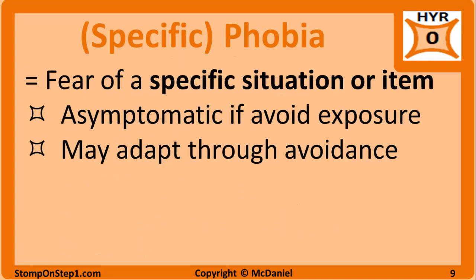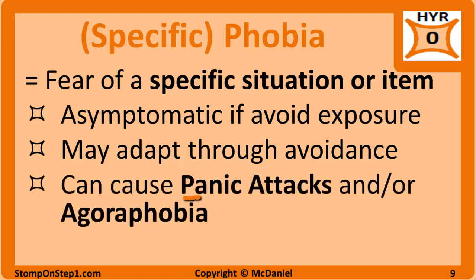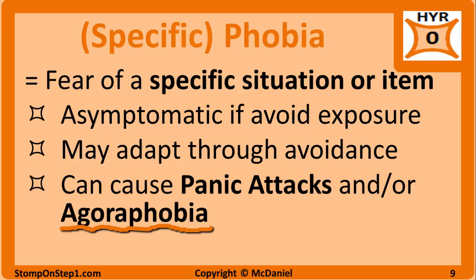Specific phobia is an excessive amount of anxiety related to a specific situation or item that interferes with function. Common examples include fear of heights, spiders, or medical injections. These individuals can be relatively asymptomatic in the absence of exposure to what they fear. Some individuals adapt quite well and avoid exposure entirely — for example, somebody afraid of heights may move to an area with no mountains or high-rise buildings. Specific phobia can lead to a panic attack, but these attacks only occur as a result of exposure to the feared stimulus. In extreme cases, specific phobia can lead to agoraphobia, such as if someone afraid of spiders never wants to leave their house.